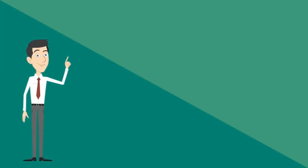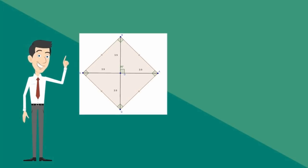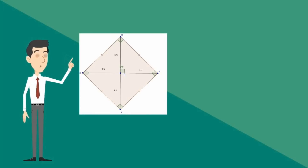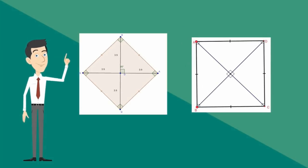A square could be described as a rhombus with four right angles, or a rectangle with congruent sides.